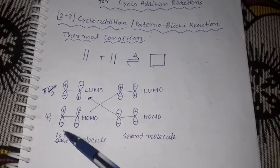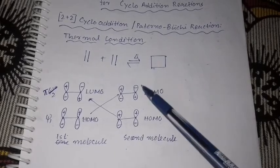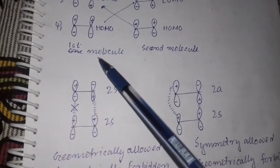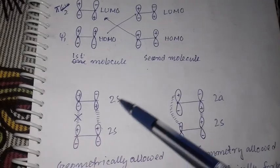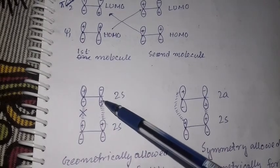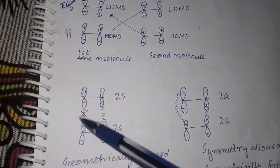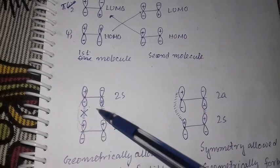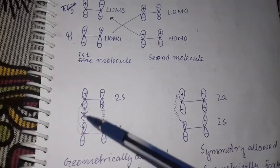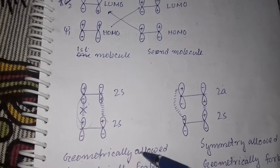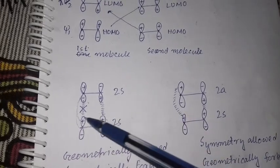In the reaction, one molecule's HOMO will react with the other molecule's LUMO. The first molecule's HOMO interacts with the second molecule's LUMO. Here, a positive lobe interacts with a positive lobe, but this positive lobe interacts with a negative lobe — making this transition symmetry forbidden.